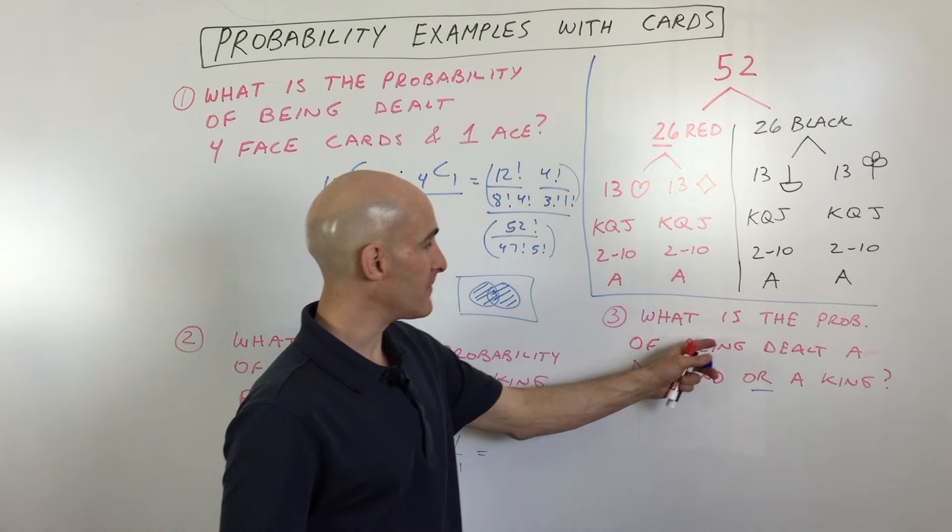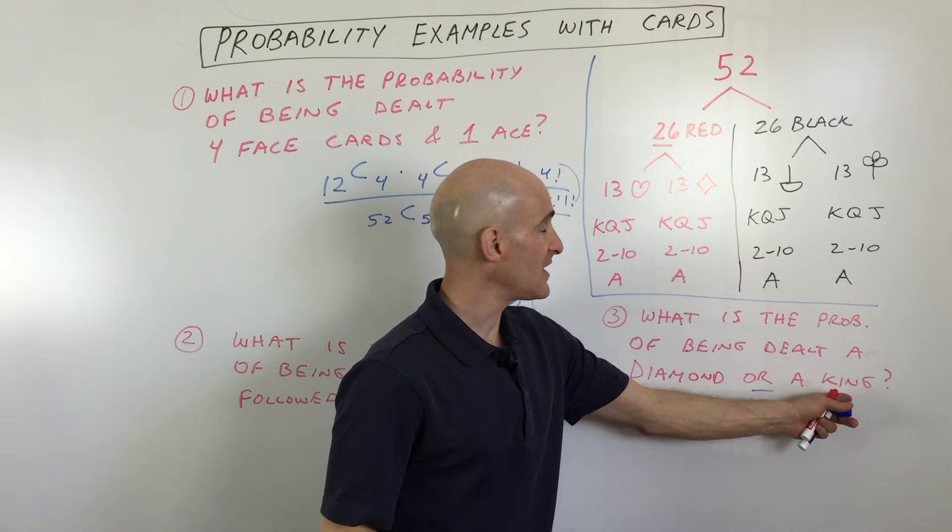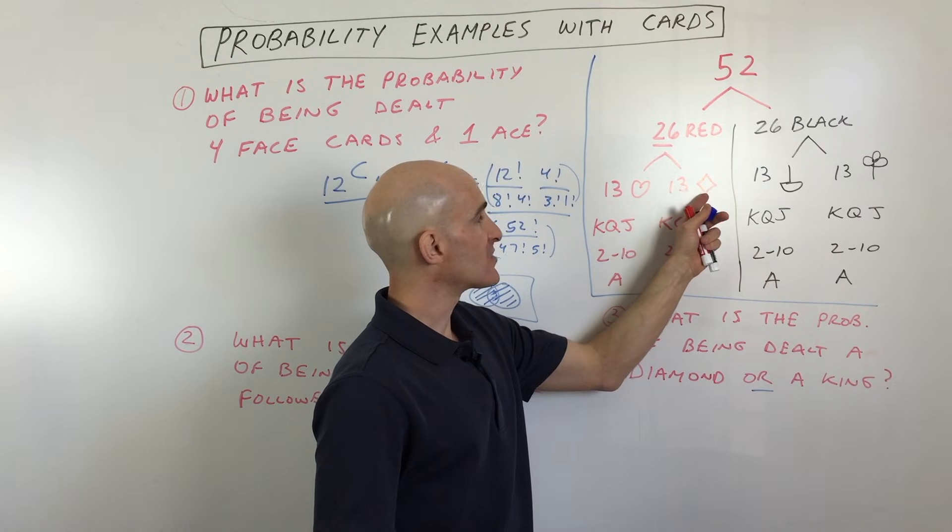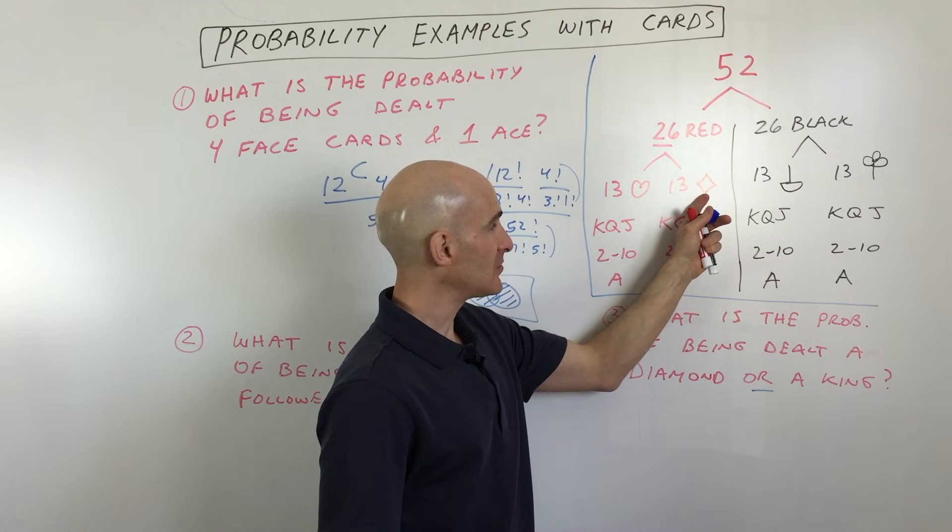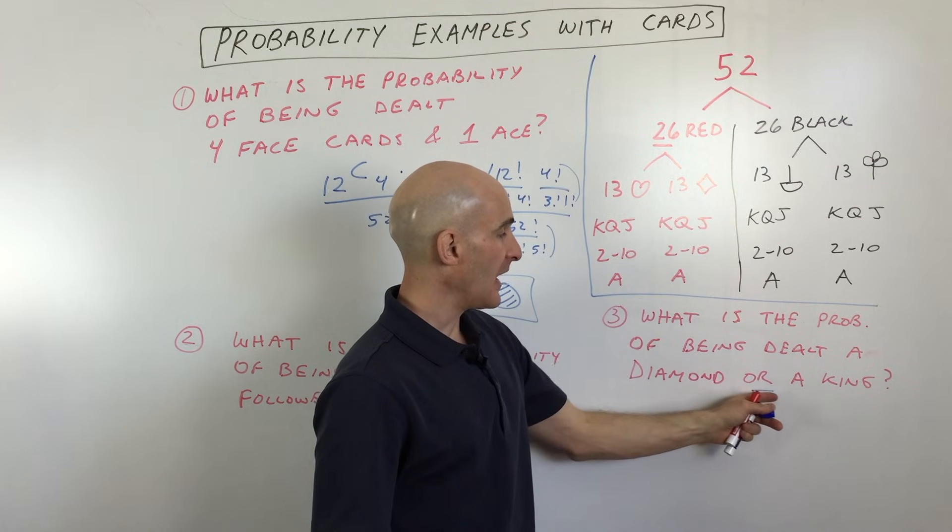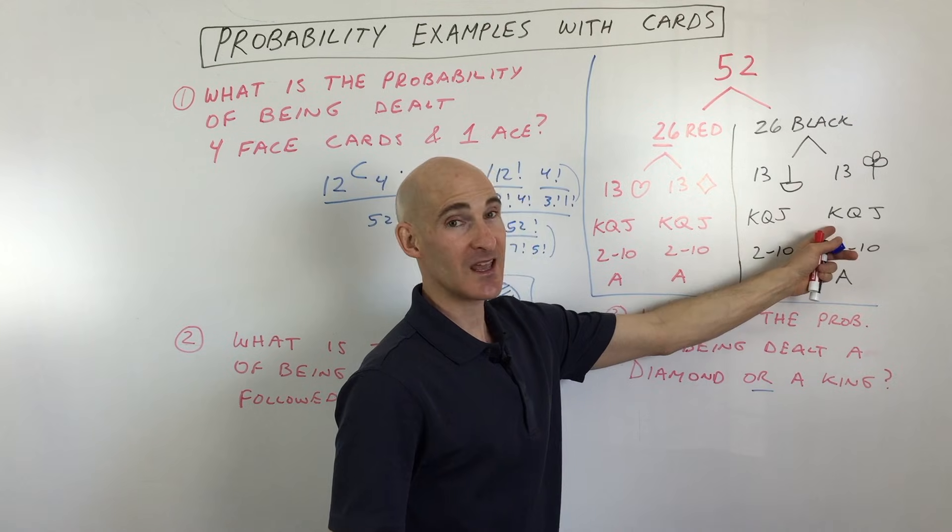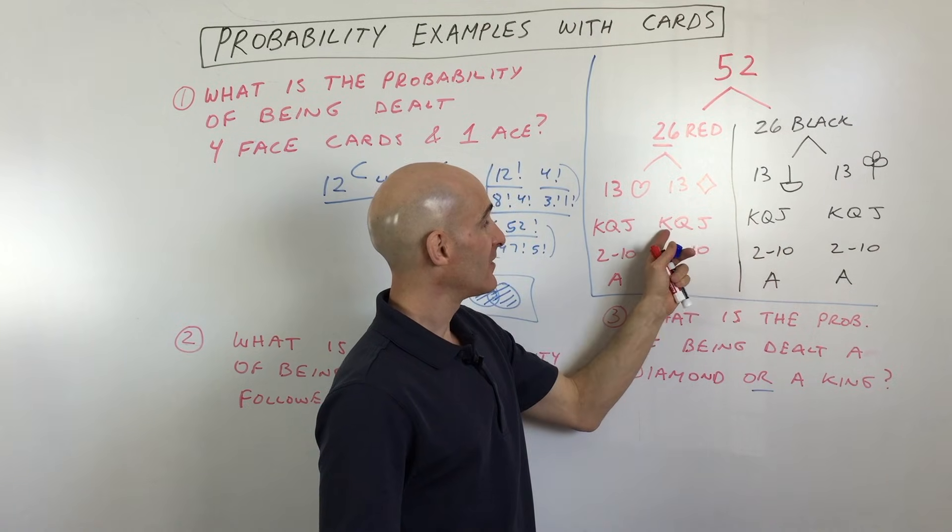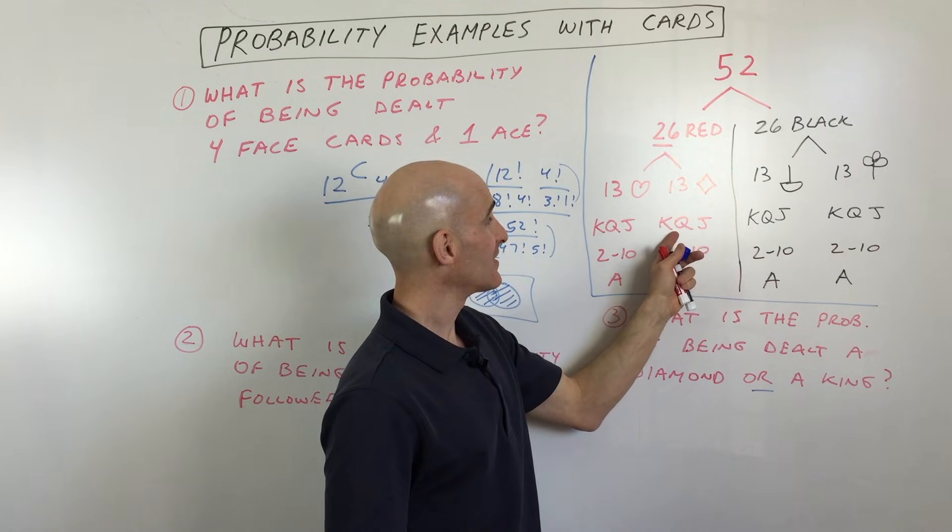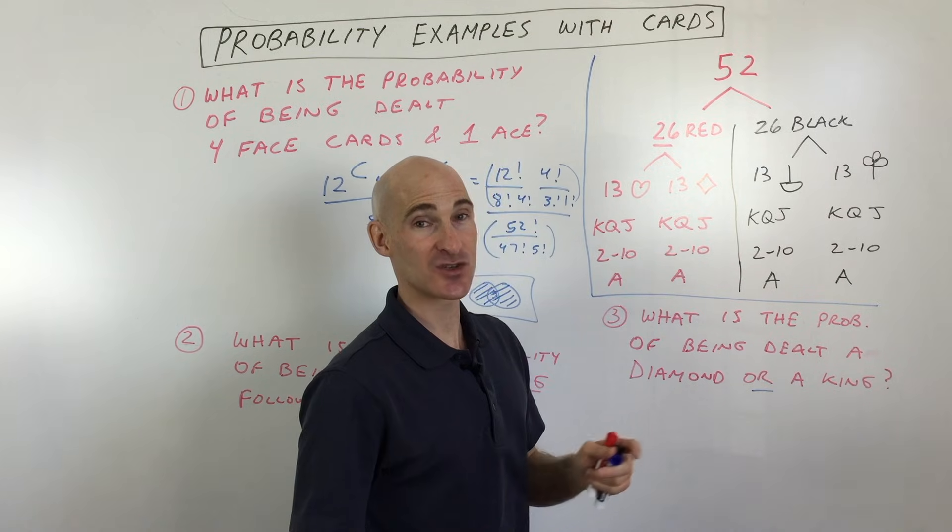So back to this problem. What is the probability of being dealt a diamond or a king? Well, you say, there's 13 diamonds. And how many kings are there? There's four kings, but there's one king of diamonds. So you're double counting that.